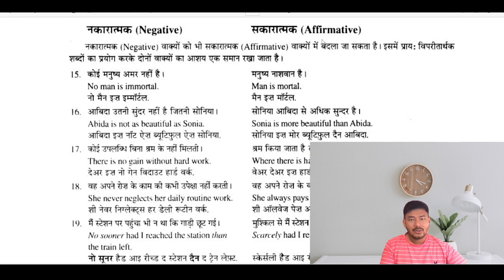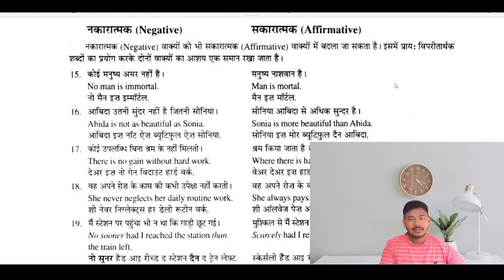Then, negative to affirmative — sakaratma. For example: No man is immortal — Man is mortal. Basically, here we have played with antonyms and synonyms. Immortal means amar, and mortal — naswan — means a person who will die.